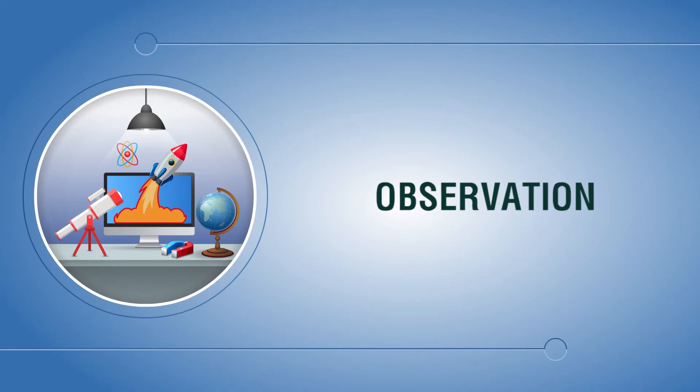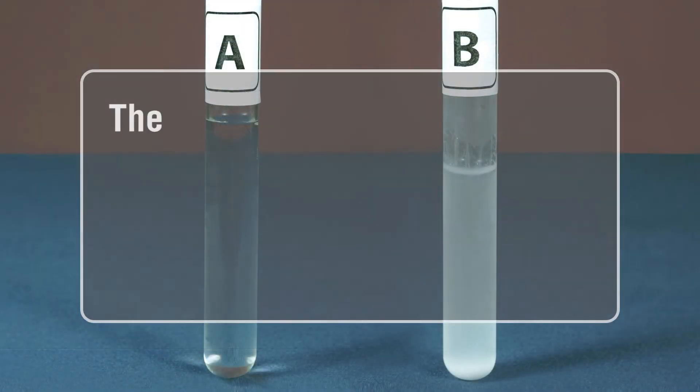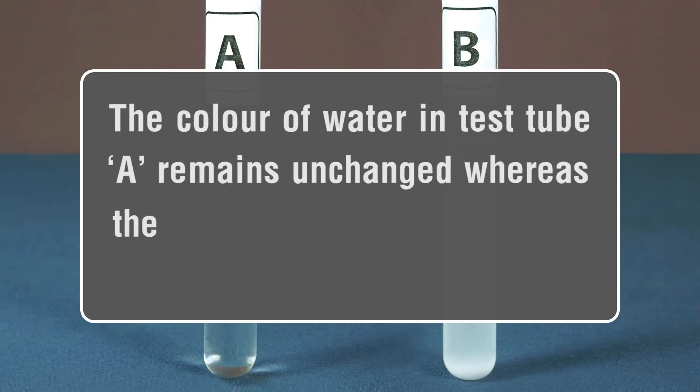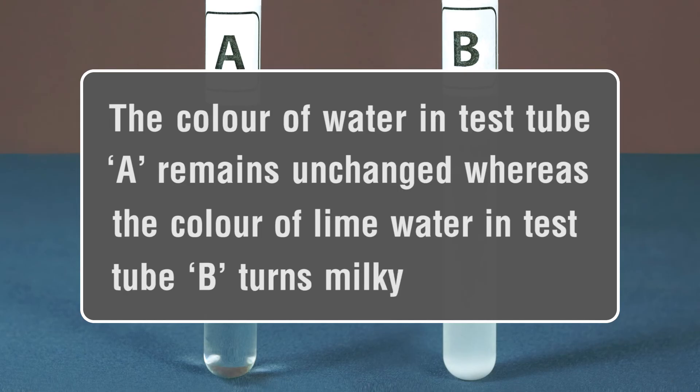Observation: The color of water in test tube A remains unchanged, whereas the color of lime water in test tube B turns milky.